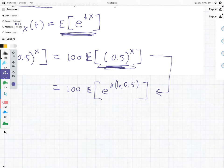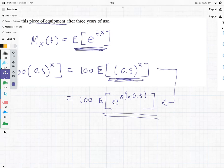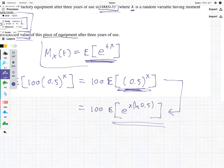Okay, but what this does do, by writing it in this way, we can see that, hold on, we now have our moment generating function format, which means we are equal to 100 times M sub x of ln 0.5,